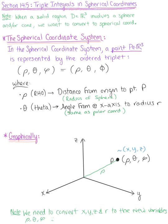To see angle theta, we take point P and think about its projection into the xy-plane. The radius is the distance from the origin to that projected point. We have theta as the angle from the positive x-axis to our radius, with the length y and length x creating that right triangle.